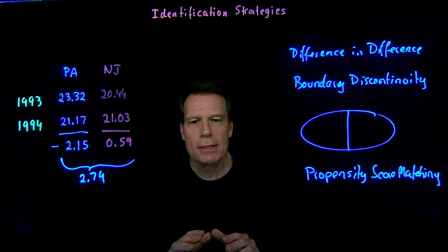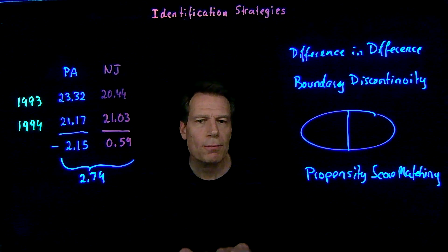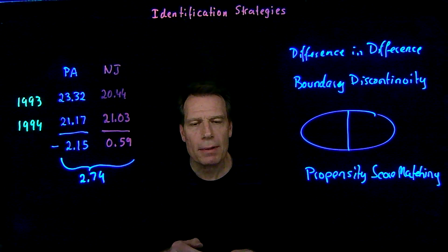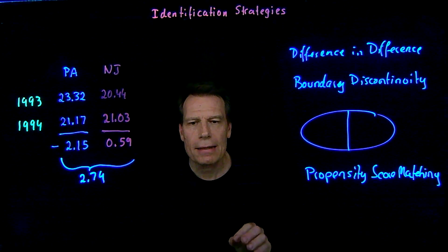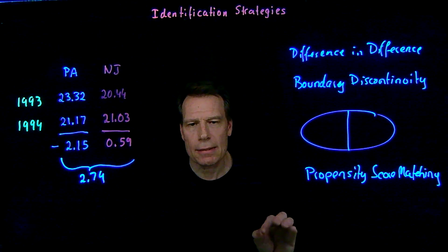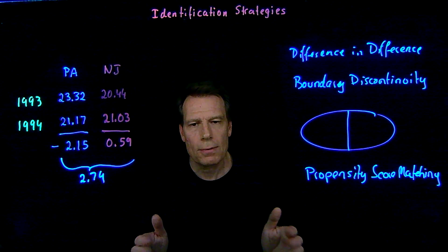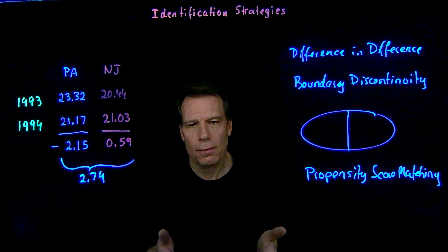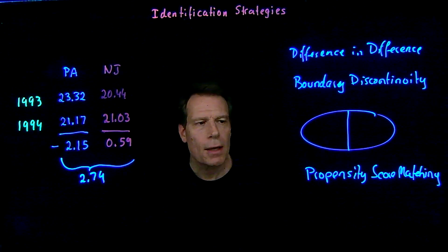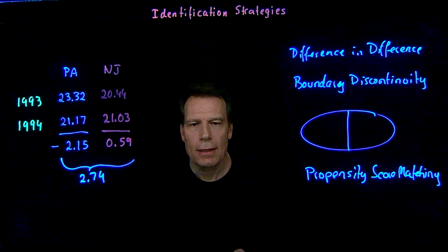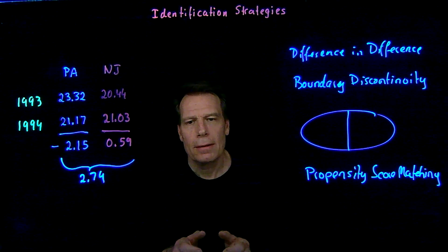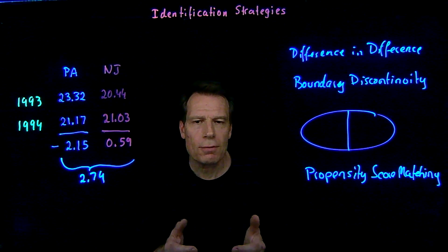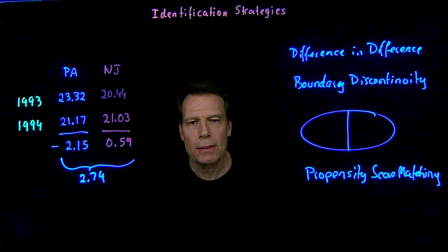However, economists are somewhat skeptical of this approach. If two families look identical in every way but one sent their child to preschool and the other did not, there must have been something unobserved that's different about those families — and that unobservable factor might itself be a confounder. If we can only match on observable characteristics, we may still worry about unobservable confounders we haven't adjusted for. We can only be confident in propensity score matching if we believe we've covered all our bases with observable characteristics and truly are comparing like to like.